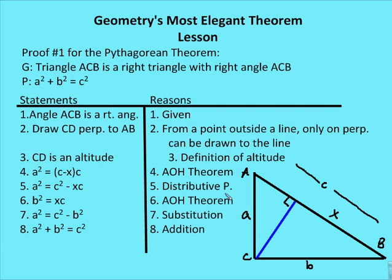We're given that triangle ACB is a right triangle with right angle ACB. We want to prove that AC squared plus CB squared is equal to AB squared. We start with the given that angle ACB is a right angle. Then we draw CD perpendicular to AB, which is our altitude. From a point outside a line, only one perpendicular line can be drawn. We label point D and note that CD is an altitude by definition.